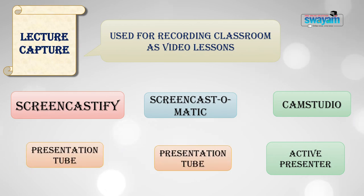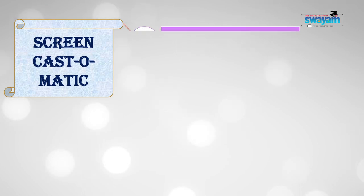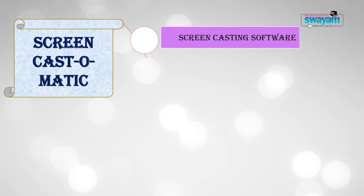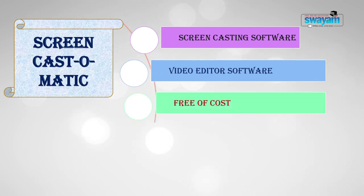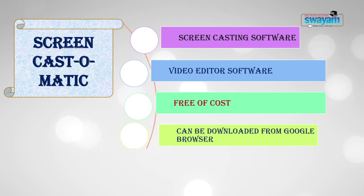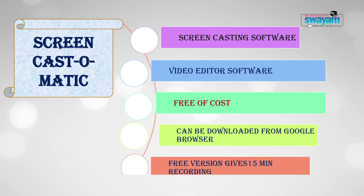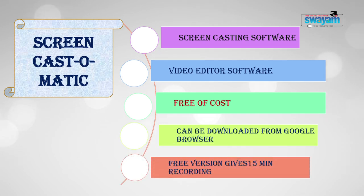Let us discuss Screencast-O-Matic briefly, which is a very good software. Screencast-O-Matic is both a video editing and screen casting software. It can be downloaded free of cost from a Google browser and is a very popular software for the creation of video tutorials. To use Screencast-O-Matic, follow these steps: on the homepage of the Screencast-O-Matic Recorder, click on Screen Recorder, then click on the icon 'Start Recording for Free.'